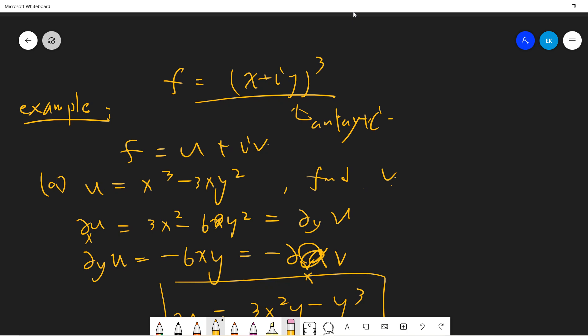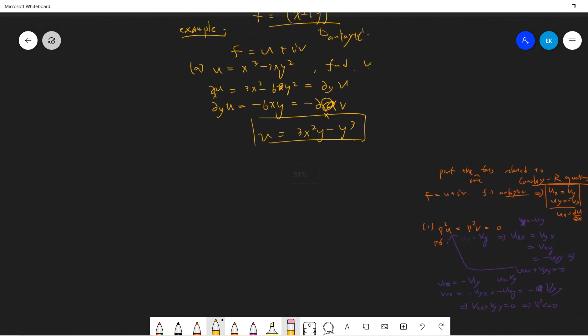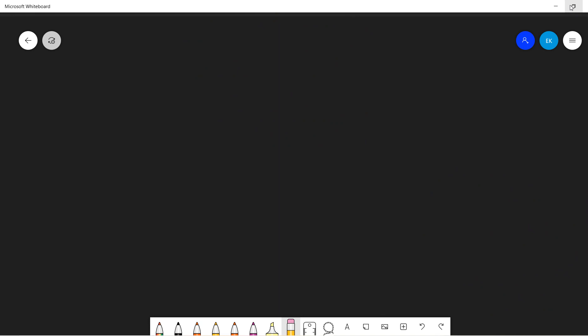This is a simple example. Next time we will quickly prove what is the polar coordinate relation of the Cauchy-Riemann equations. I will see you guys in the next video.